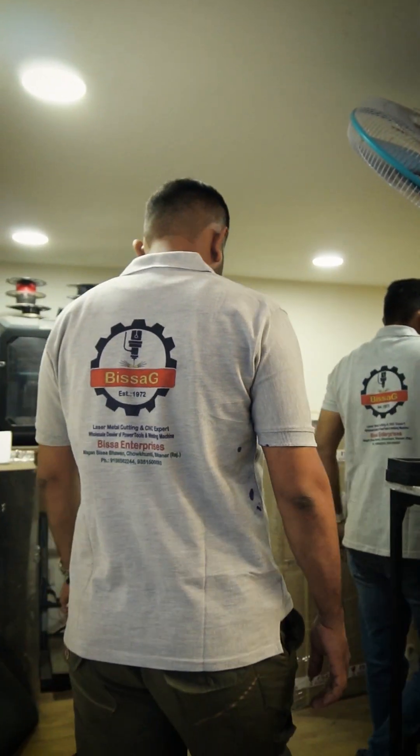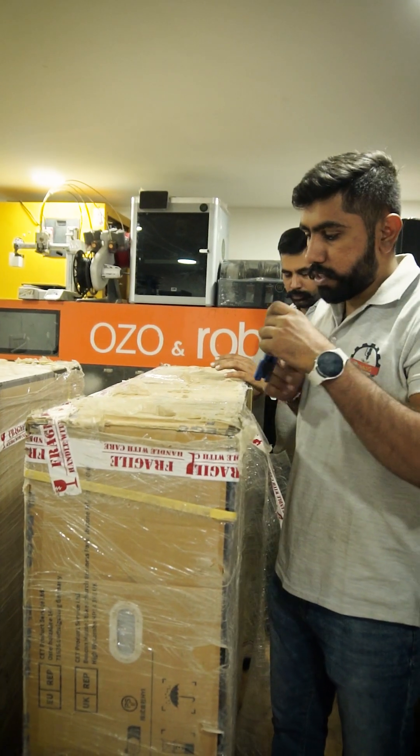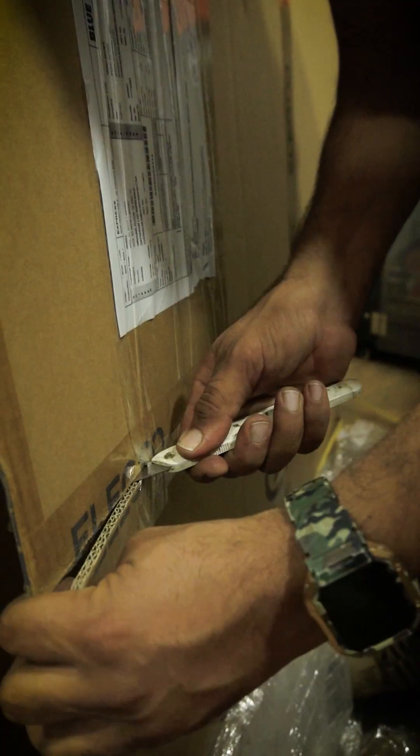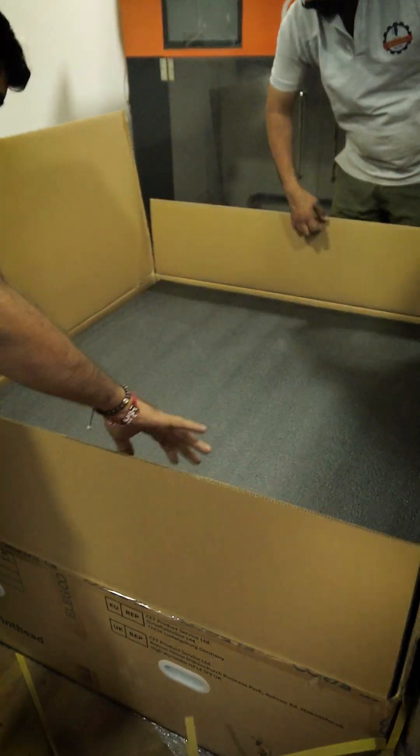Exciting day today, we are unboxing the Algoo Ziga Storm 800 x 800 x 1000 mm 3D printer, perfect for your large scale projects. Let's check it out.